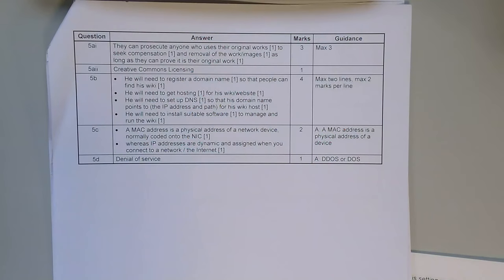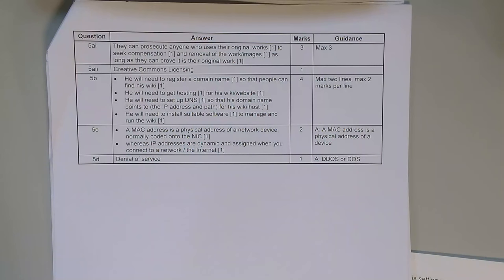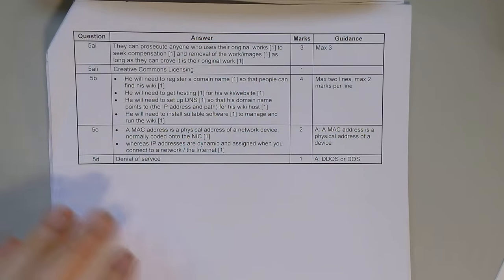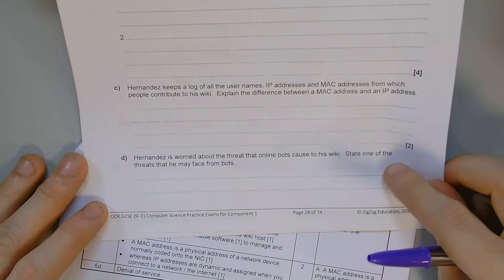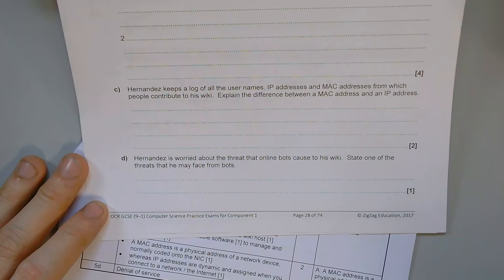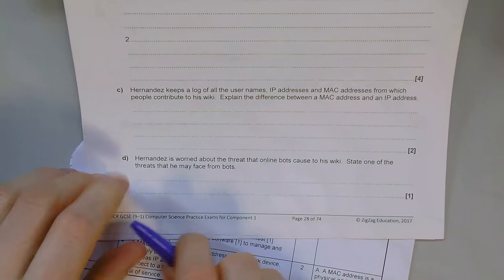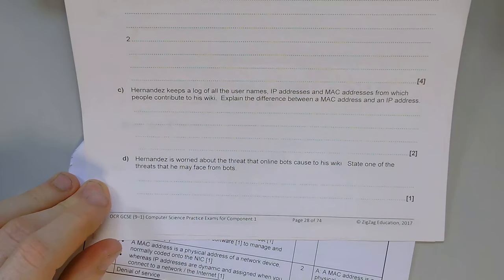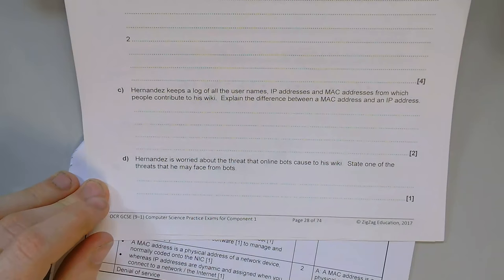The MAC address is the address of the hardware — the physical network device — and is hexadecimal. The IP address is dynamic and changing, and is denary. An attack where bots flood the wiki is called a denial of service attack — don't use the acronym DDoS because DOS is also associated with MS-DOS, an operating system Microsoft made. Always write 'denial of service' in full.